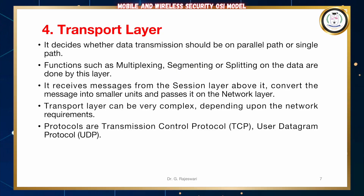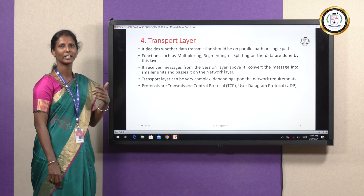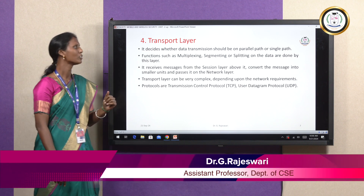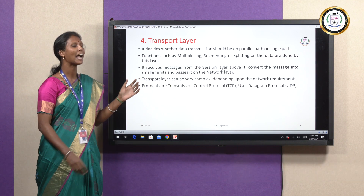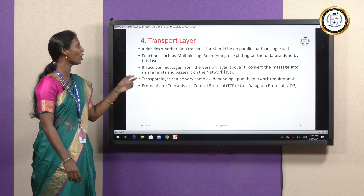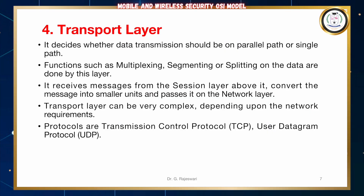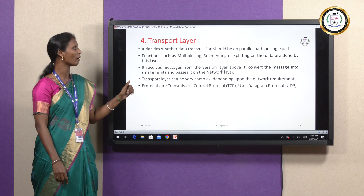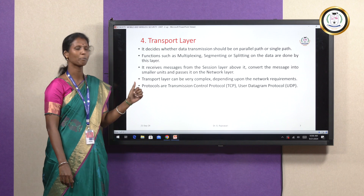The fourth layer is the Transport Layer. The transport layer decides whether data transmission should be done on a parallel path or a single path. Functions such as multiplexing, segmenting, or splitting of data are done by this layer. It receives messages from the layer above it, the session layer, and converts the messages into smaller units and passes them to the network layer. Transport layer can be very complex depending upon the network requirements. The protocols are Transmission Control Protocol (TCP) and User Datagram Protocol (UDP).